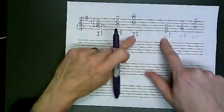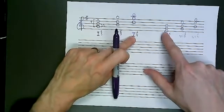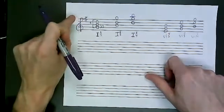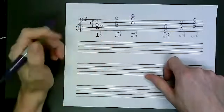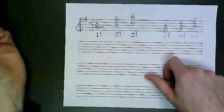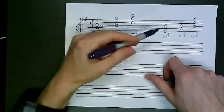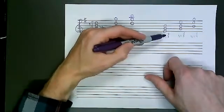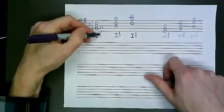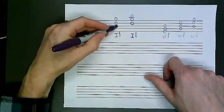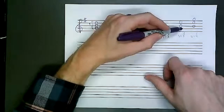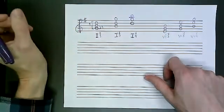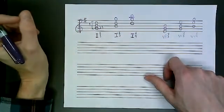The Roman numeral, in other words, always refers to the root in relation to the key signature. So in the key of G, the root of this chord is G, so it's Roman numeral one. In the key of G, this root E is the sixth note, so the Roman numeral is six. And then the superscripts refer to the distance from whatever the base note is to the other two notes of the chord in its most reduced position.